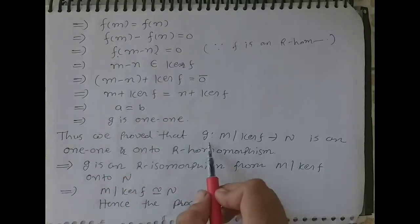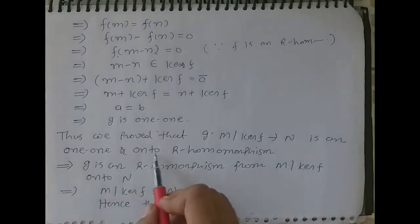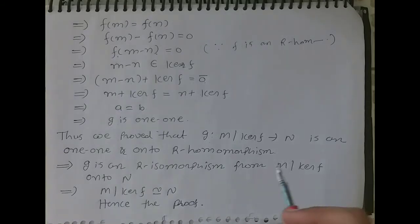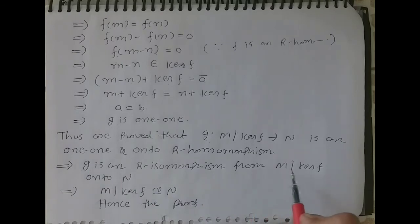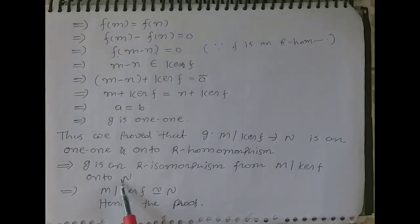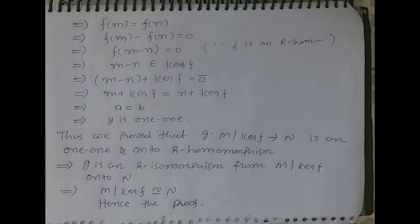Thus we have proved that the map G from M quotient kernel of F to N is a one-to-one and onto R-homomorphism. This means G is an R-isomorphism from M quotient kernel of F onto N. Hence M quotient kernel of F is isomorphic to N. This completes the proof of the fundamental theorem of R-homomorphism: if F is an R-homomorphism from R-module M onto R-module N, then M quotient kernel of F is isomorphic to N.